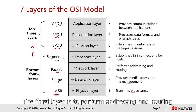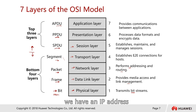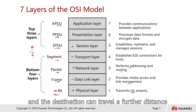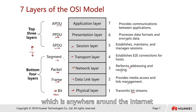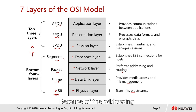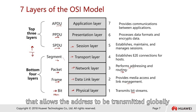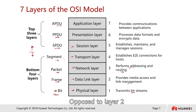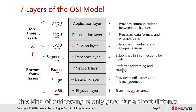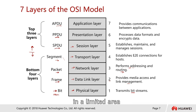The third layer performs addressing and routing. With IP addresses, the source and destination can travel a further distance — anywhere across the internet. Because of the addressing and routing mechanism, addresses can be transmitted across the globe. In contrast, layer 2 addressing is only good for a short distance or limited area.